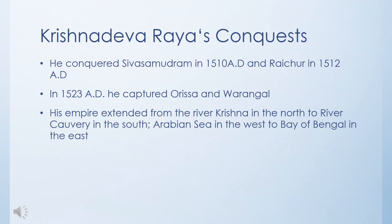Krishnadevaraya conquered Shiva Samudra in 1510 AD, Raichur in 1512 AD, and in 1523 AD he captured Orissa and Warangal. His empire extended from the river Krishna in the north to the river Kaveri in the south, the Arabian Sea in the west, and the Bay of Bengal in the east.